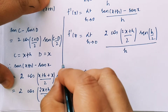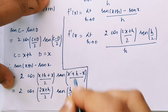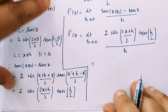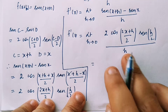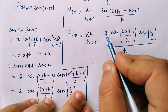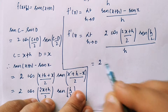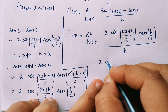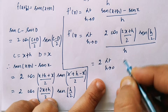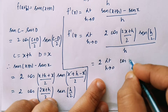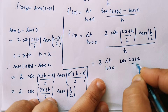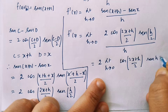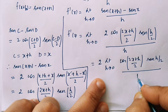Now, f'(x) is equal to — what do we do now? We can apply the limit h tends to 0. Since 2 is a constant, we can take 2 outside. So we have: 2 times limit h tends to 0 of cos((2x+h)/2) times sin(h/2) divided by h.